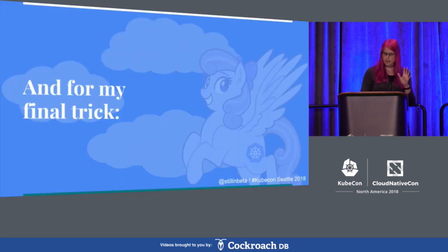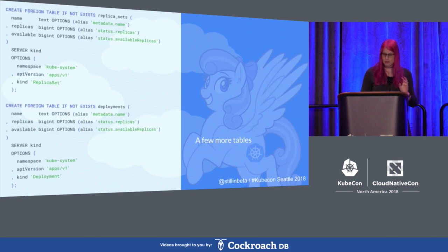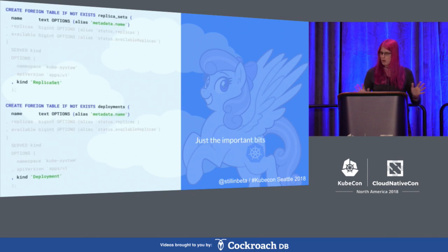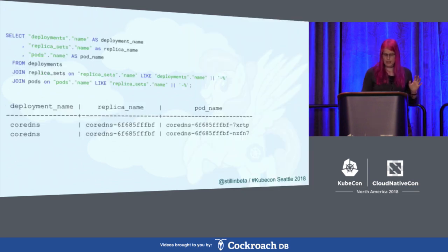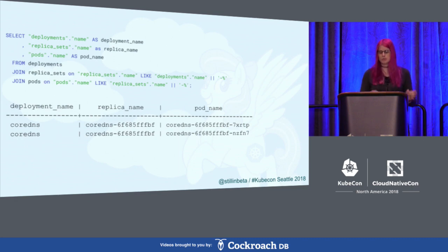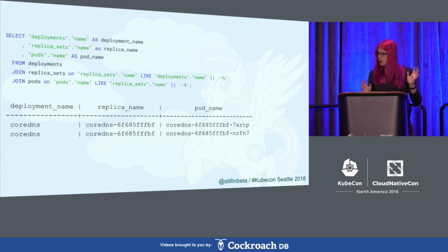And for my last trick — I'm running out of time, but I've got one last thing. I'm going to need a few more tables. This is way too much text for a slide, but fortunately we don't care about most of it. We're just going to create new replica sets and deployment tables. And that's right, we're going to do joins. We can use the fact that pod names, replica names, and deployment names share prefixes and combine them together. Worry no more about getting your pods and deployments confused.